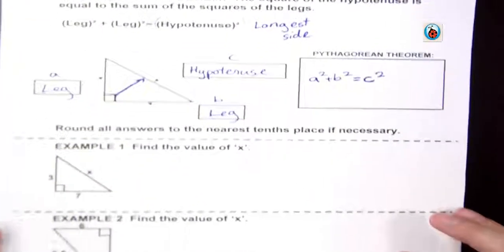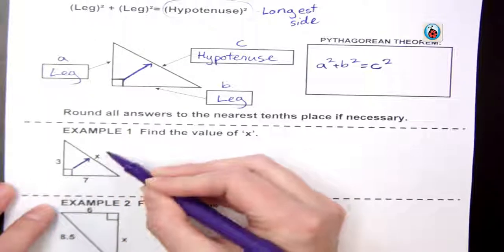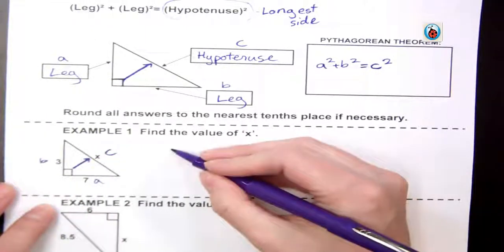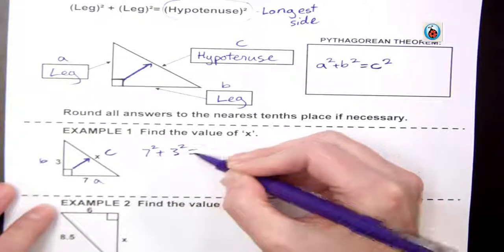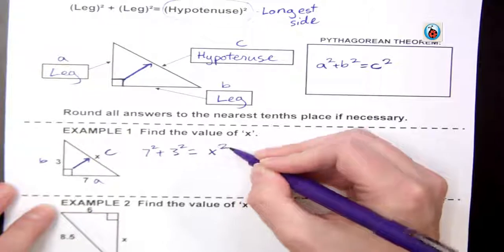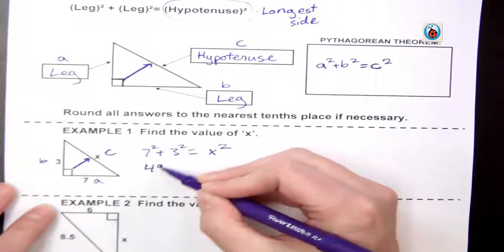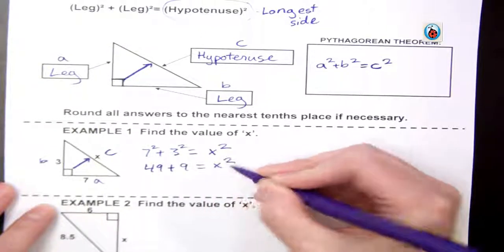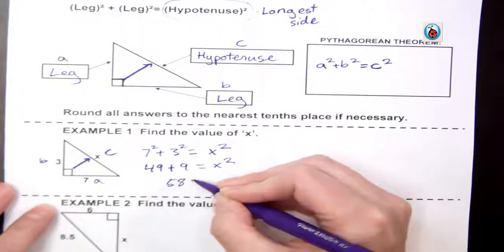In our first example, we recognize that x is our hypotenuse, so that would be our c. This is a and b, so we have 7 squared plus 3 squared equals x squared. Then I do the math: 7 squared is 49, 3 squared is 9, equals x squared. I add these together to get 58 equals x squared.